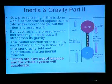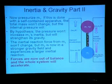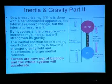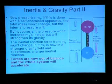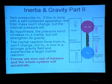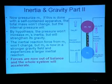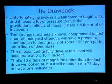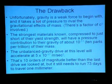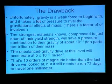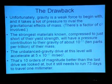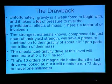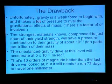Now let's pressurize M1, keeping its mass the same. By hypothesis, the pressure won't increase M1's inertia but will strengthen its gravity. The imposed acceleration on M2 has become bigger, and that inertial reaction has become bigger, while the reaction on M1 is still the same because pressure does not contribute to inertia — we're assuming. The forces are out of balance and the whole system will accelerate. Unfortunately, gravity is a weak force to begin with and it takes a lot of pressure to rival the gravitational effect of mass — there's a factor of C squared involved. The strongest materials currently known, compressed to just short of their yield strength, will have a pressure contribution to their gravity of about 10 to the minus 11th — that's 10 parts per trillion.